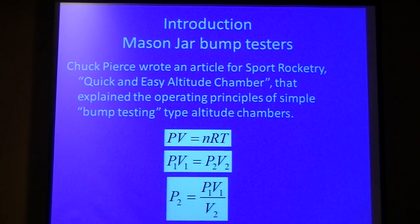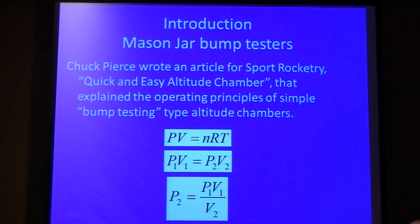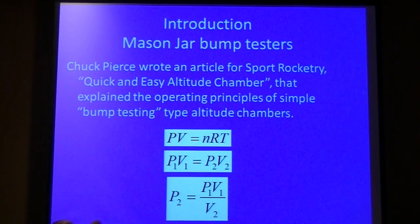A ways back there was a Sport Rocketry article by Chuck Pierce, and I'll pick on him for the mason jar bulk testers. You can get these things for about 10 bucks — you stick your altimeter in a jar, stick a syringe on it, and use the basic ideal gas law, PV equals NRT. Mr. Pierce derived that for us.